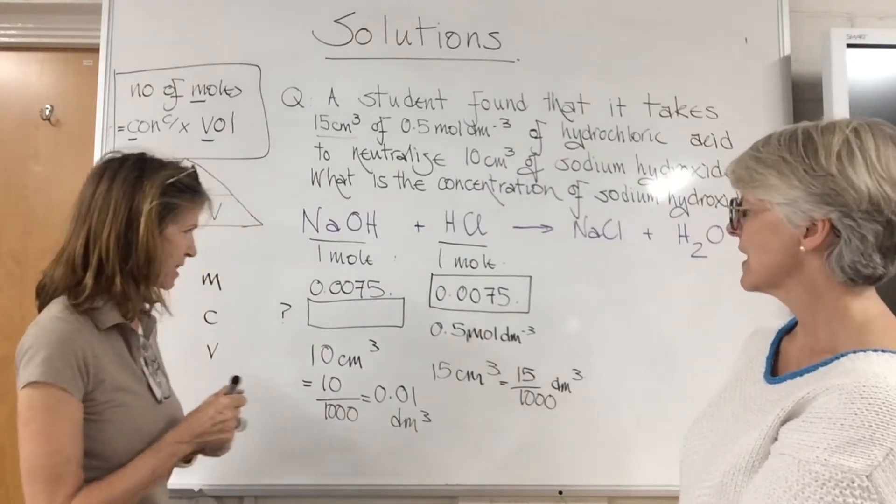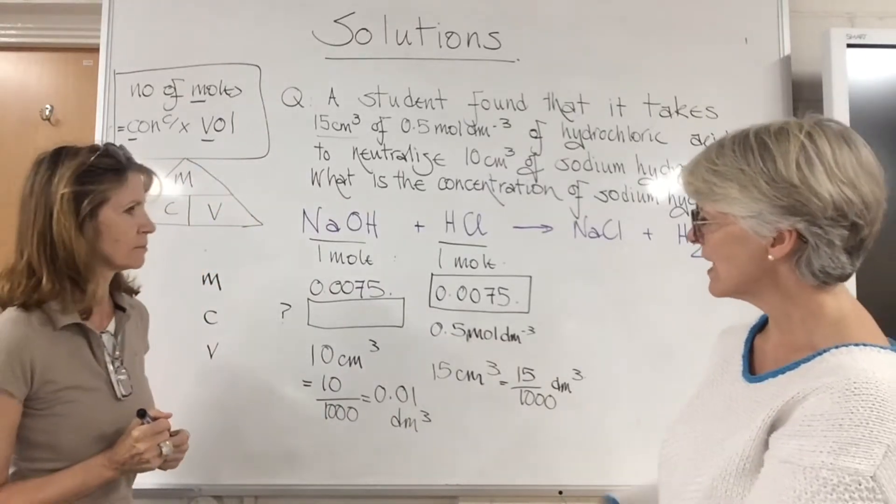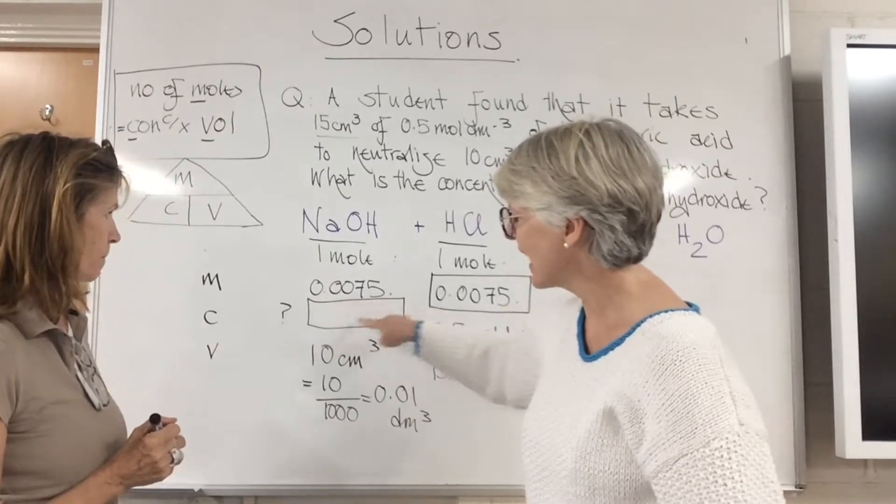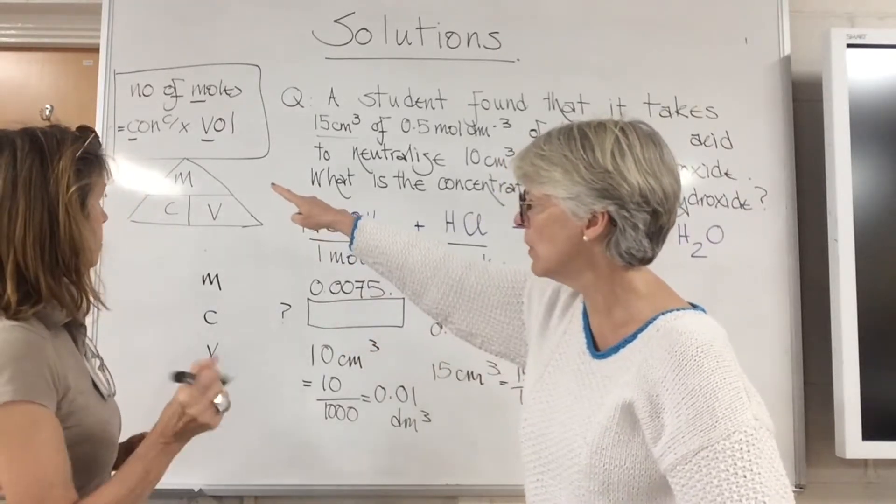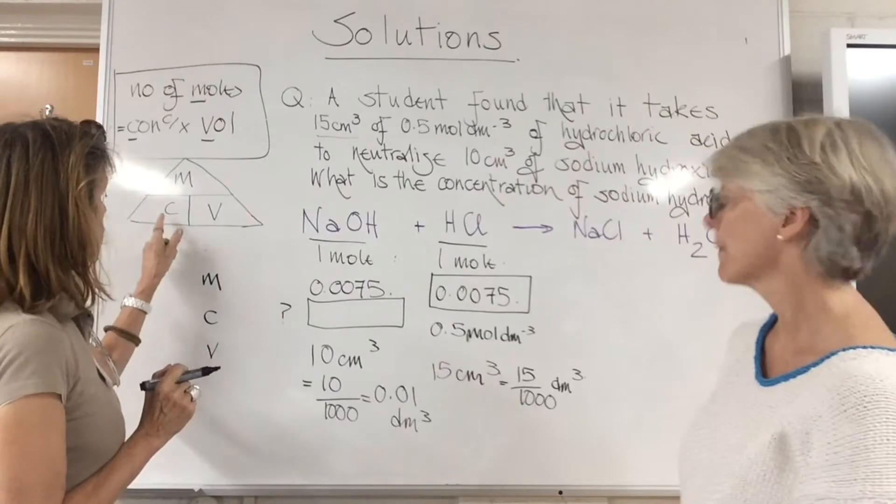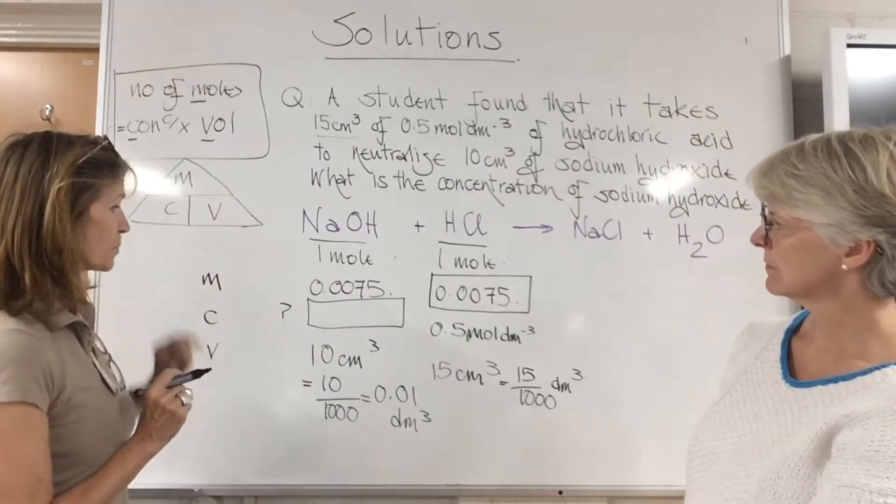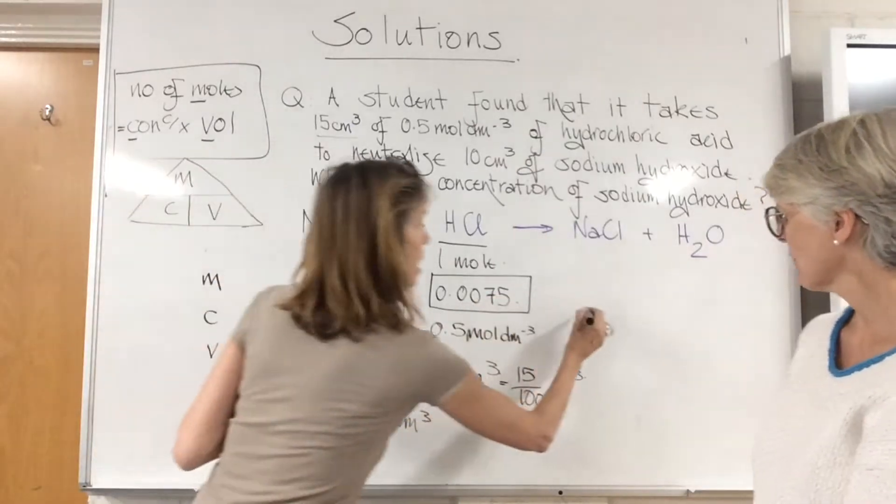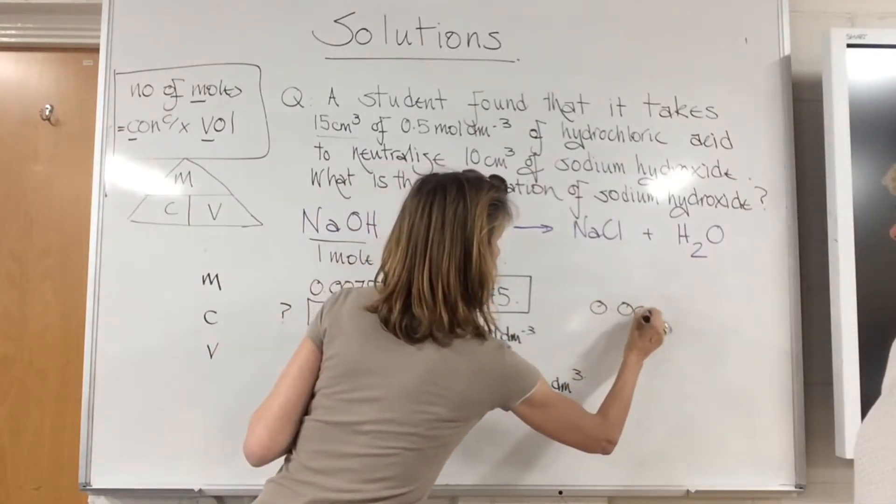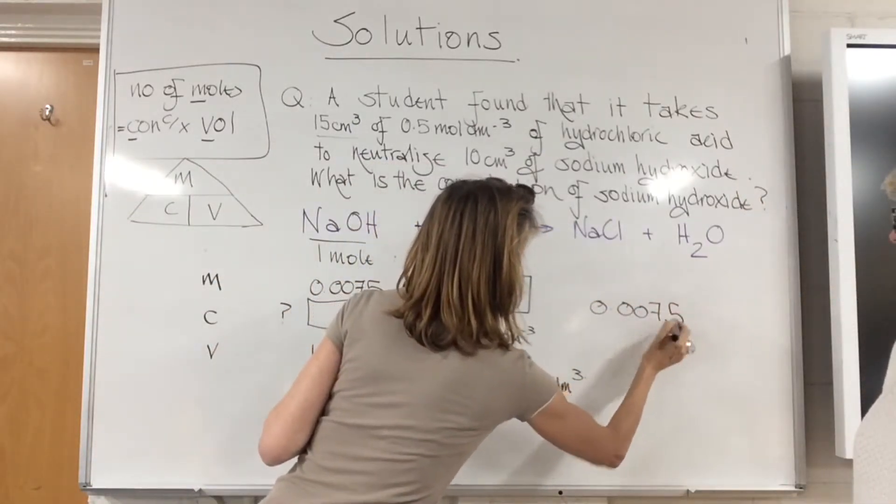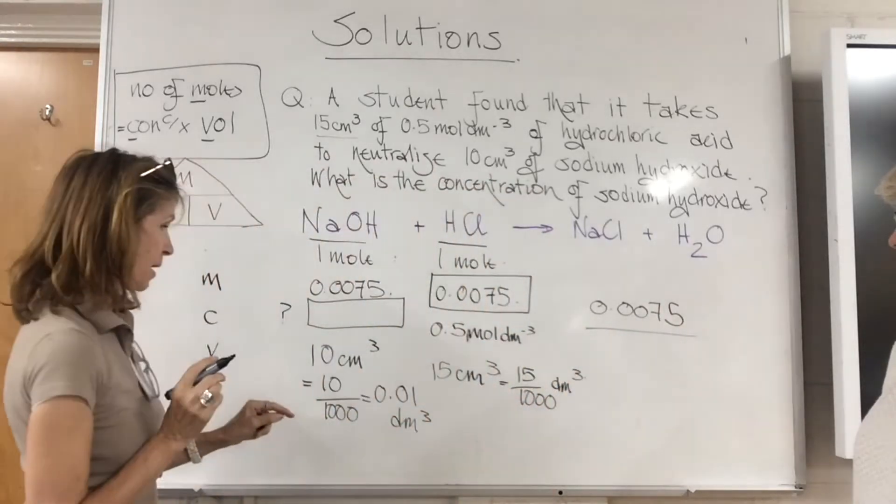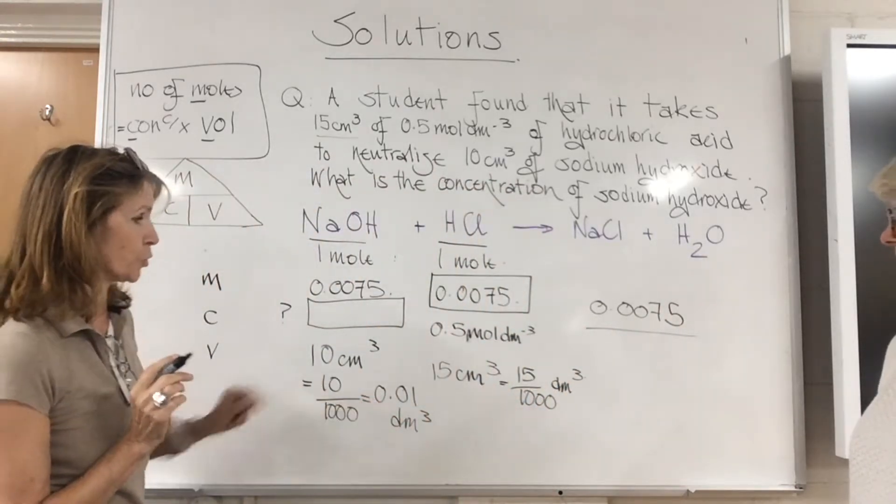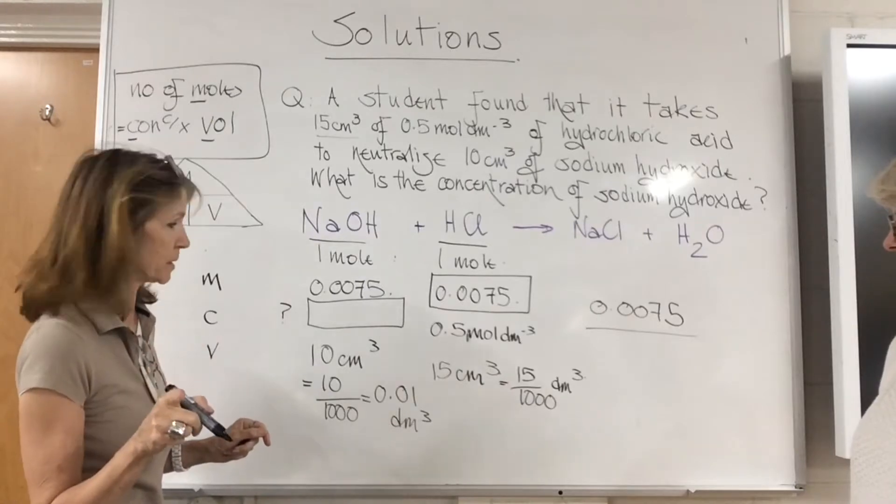What now is the calculation you need to do to get the concentration? Moles divided by volume. So concentration equals moles divided by volume. The number of moles is 0.0075 divided by the volume.